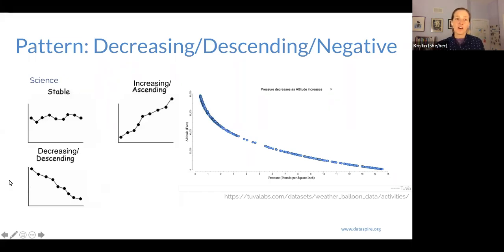Another common pattern is decreasing or descending or negative. That means as one increases, the other decreases. As pressure increases, the altitude decreases, or usually the more typical way we talk about this is as altitude increases, the pressure decreases. This is from data from a weather balloon.